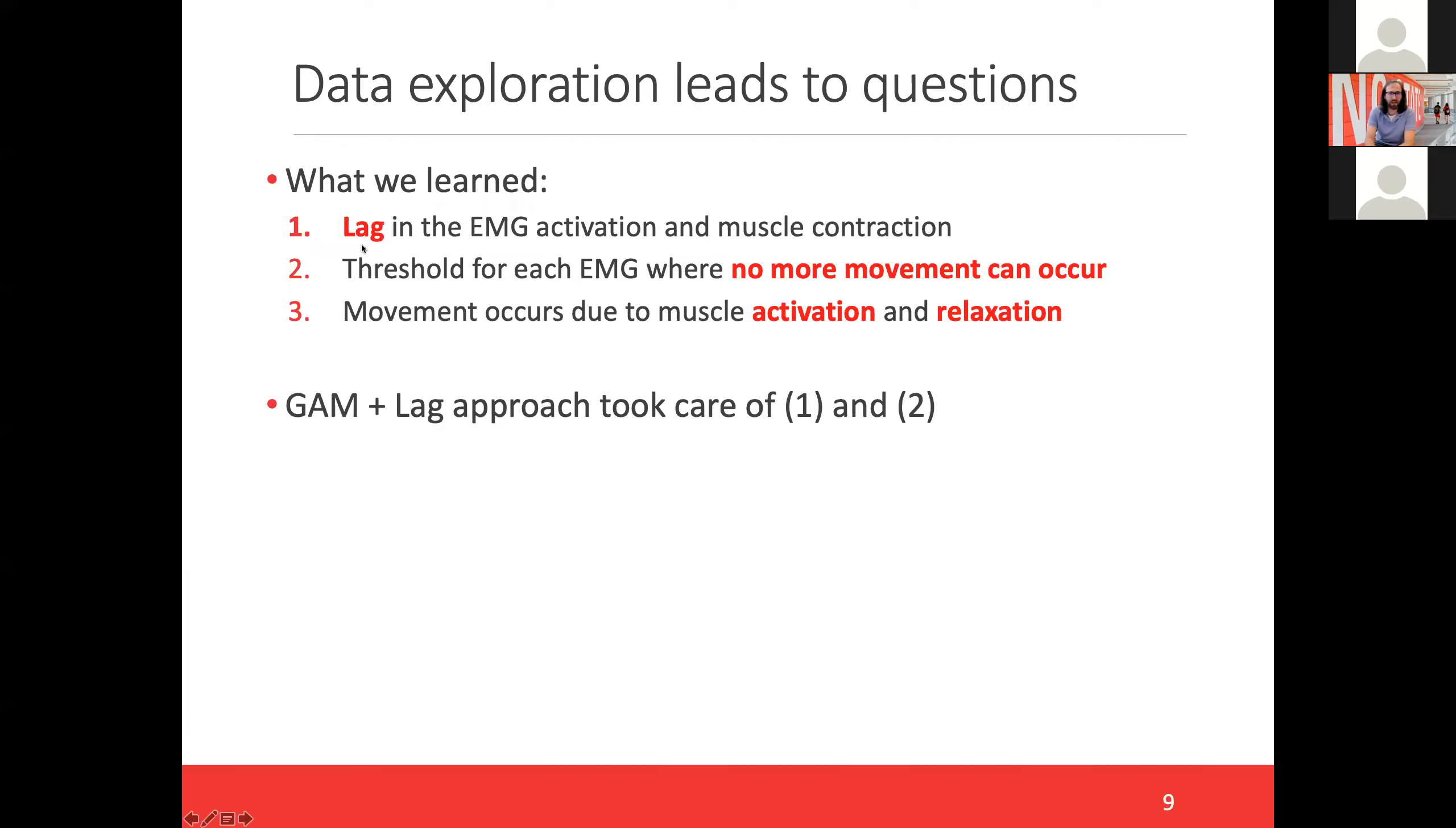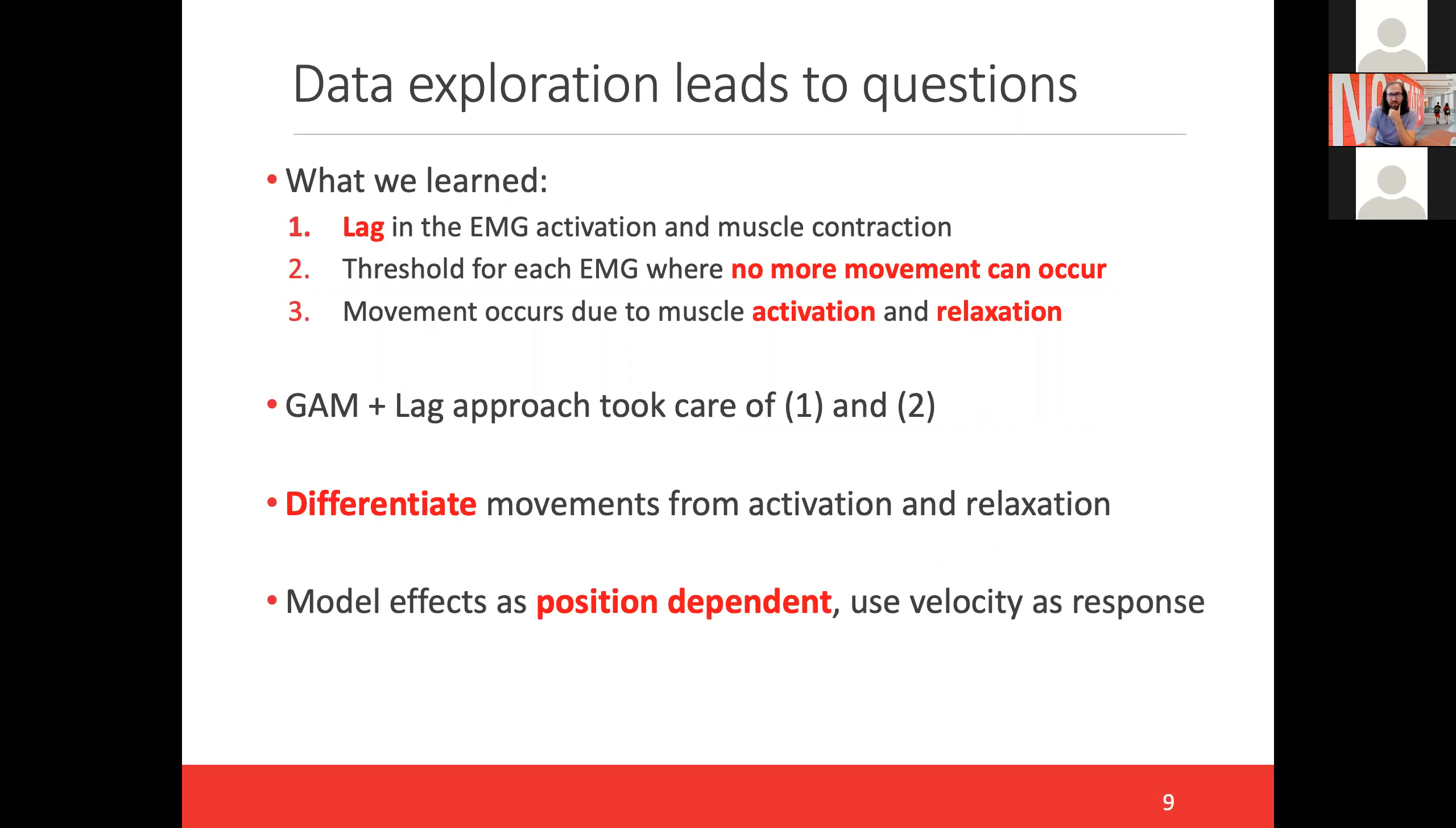So this data exploration, which was really months of back and forth between me and these collaborators discussing what's going on that's causing this to happen, led to a lot of insights. Here are the three characteristics of the data we learned: there is a lag in EMG activation and the resulting contraction leading to movement. We need a threshold for each EMG for which movement can't occur anymore due to physical constraints. And the last one, which we need to address, is that movement can occur due to both activation and relaxation of our muscles. From what I've seen in the literature, a lot of existing methods didn't really take into account this relaxation component of the model. The gamma and lag approach took care of one and two, but we need to address also three. And that's what's going to lead to a new model.